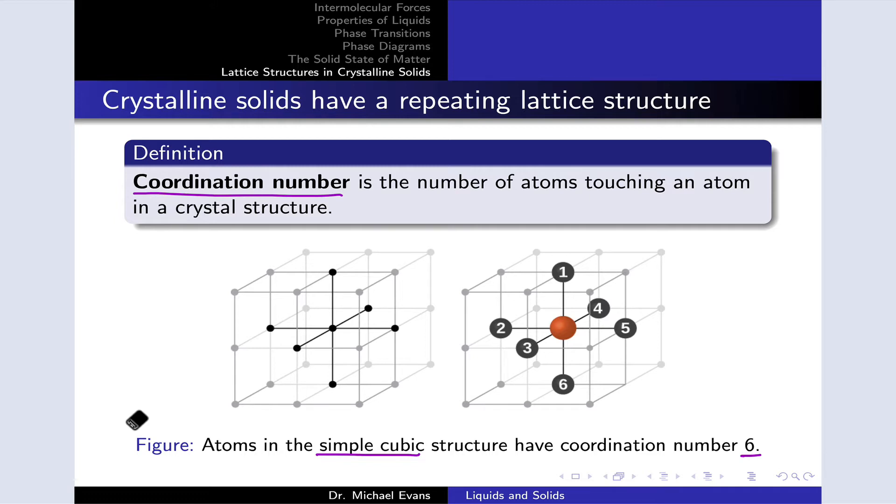For example, in the simple cubic lattice, each atom at each corner is surrounded by six other atoms. So this atom in the center has six atoms that are directly touching it. Its coordination number is six. Just to point out an atom that's close but not touching to this atom in the center, these atoms that are diagonal to the central atom are not directly touching it. They may be close to it, but they're not in direct contact, so they aren't counted toward the coordination number.